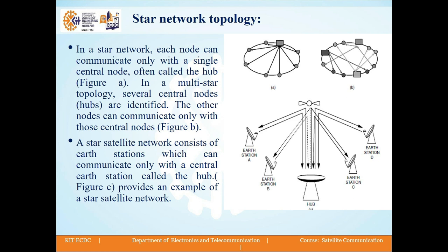In a star network or star topology, each node can communicate only with a single central node, often called the hub, as shown in Figure A. There is a central node, and all other nodes are connected to it. All communication takes place with the help of the central node.